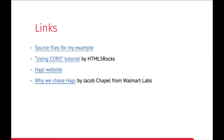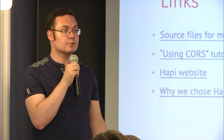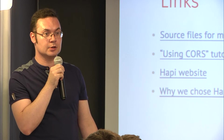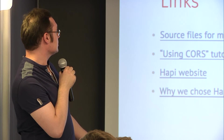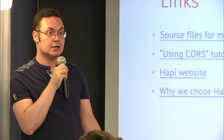I've included sources on GitHub for this example — you can see the entire setup and launch it simply by typing 'npm install' and 'npm start'. You can read more about CORS policy in the HTML5 Rocks tutorial, and I'd urge you to take a look at the Hapi website — it's a very reliable and major solution for Node.js. There's also a video from Jacob Chapelle at Walmart Labs explaining why they chose to create and use Hapi.